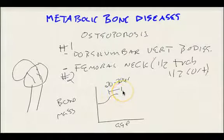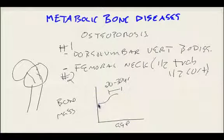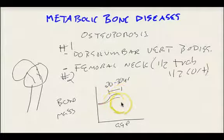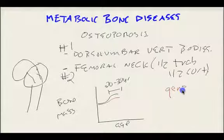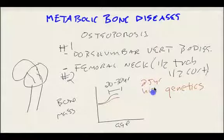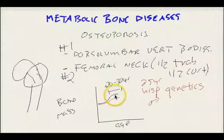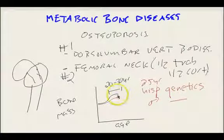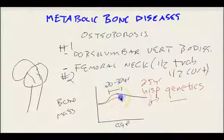If we were to compare two people with the same sex and the same background and graph them against each other, and we noticed that one of them had a lower maximum bone mass between their 20s and 30s, the main reason why you'll see that is because of genetics. If we compare two 25-year-old Hispanic males and noticed that one had a significantly higher bone mass at age 25 than the other, then we can blame that on certain genetic factors. As they age past that prime of 20 to 30, bone mass will constantly lower.